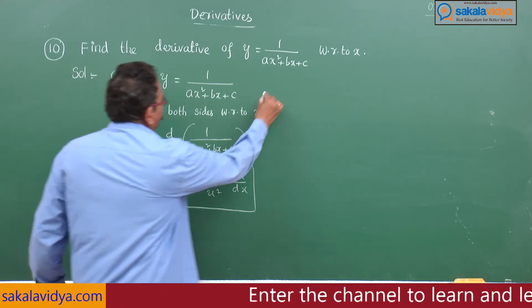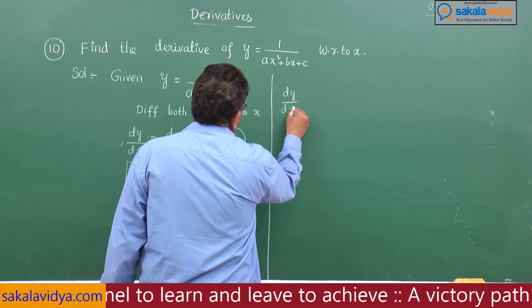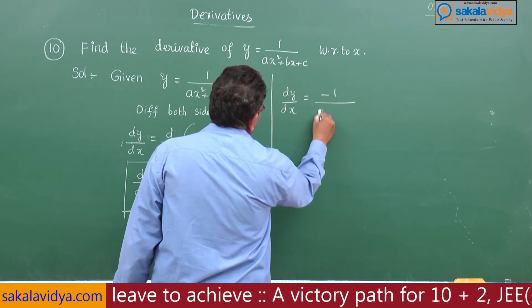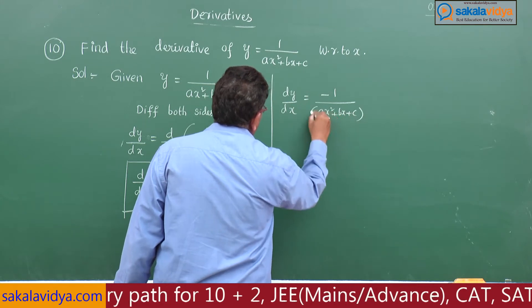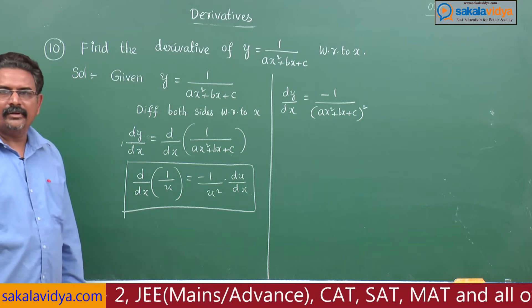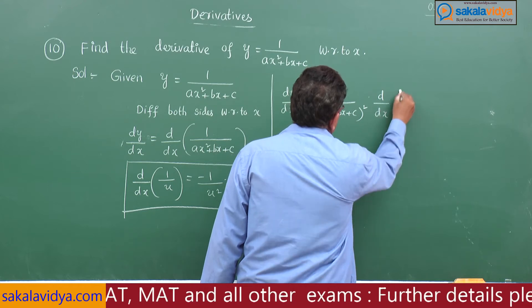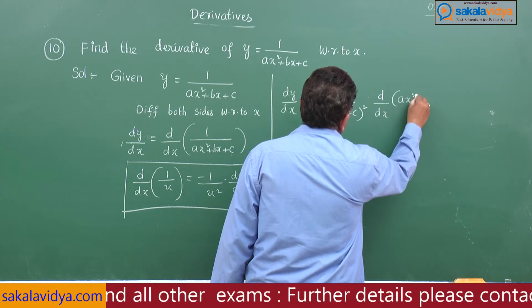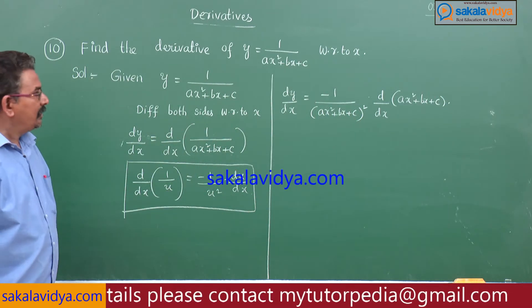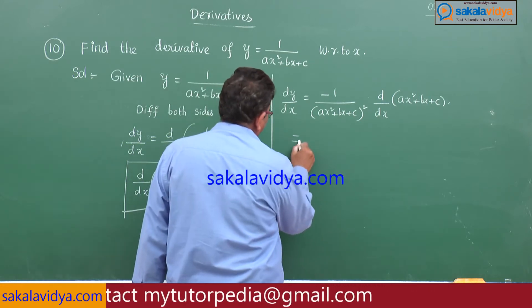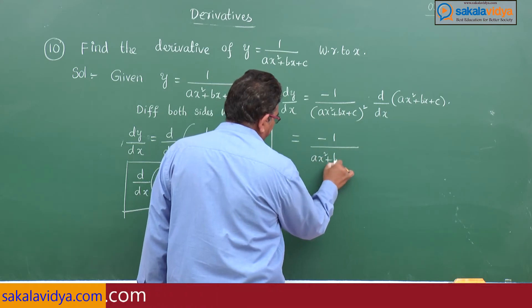Now dy by dx can be written as minus 1 by ax square plus bx plus c whole square, into d by dx of ax square plus bx plus c.